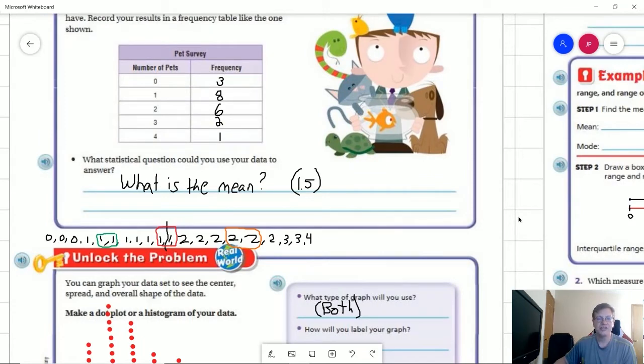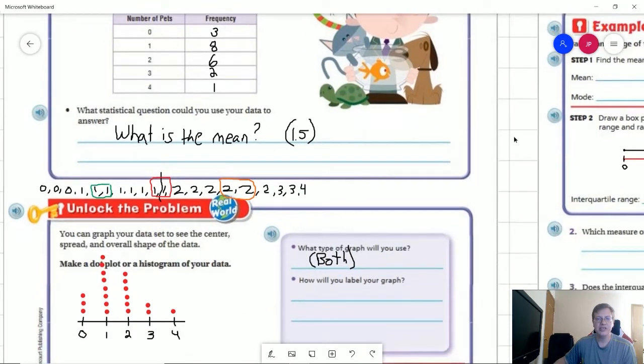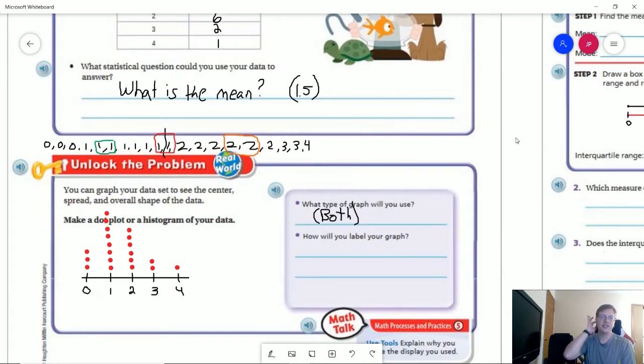To start with, what we would do is represent our data either in a dot plot or a histogram. I chose to do both. You're going to see the dot plot on this page. As I move to the top of the next page, we are going to see the histogram that I did. They're both going to be similar, but we could say different things for each of them. How will you label your graph?